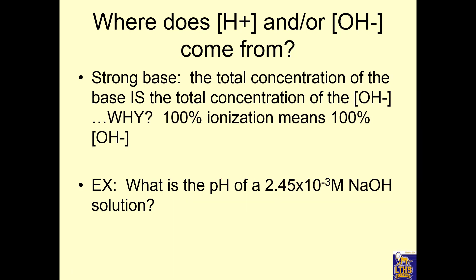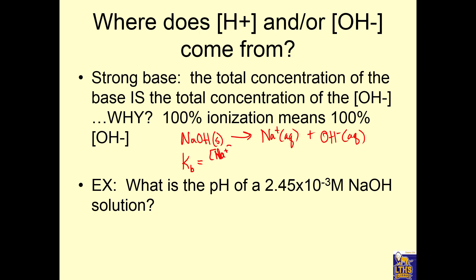Now what about strong bases? For strong bases, they also ionize completely. If we write NaOH — bases usually start solid — they ionize completely into sodium ions plus hydroxide ions. If we write a Kb for this, we have sodium ions times hydroxide ions, and since the base starts solid, nothing goes on the bottom. So Kb is very large — that's what strong base means.